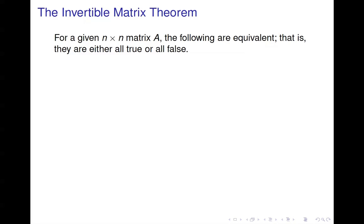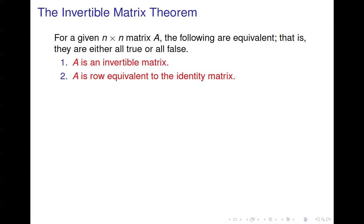This theorem says if you have a given n-by-n matrix A, the following are equivalent — meaning they're either all true or all false. Number one: A is an invertible matrix. Number two: A is row equivalent to the identity matrix. That makes sense because we find out if A is invertible by doing row operations to get it to the identity matrix. If we can do that, A is invertible; if we can't, it's not.